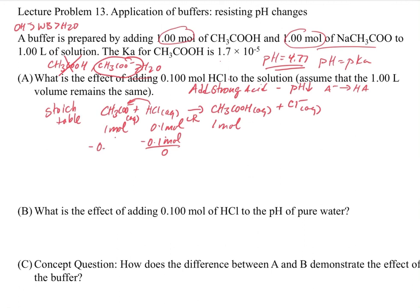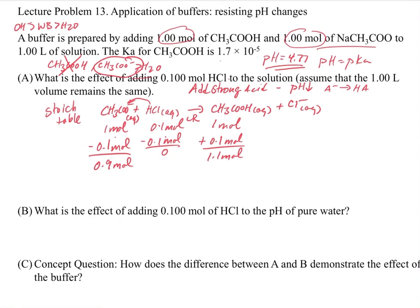The HCl converts 0.1 moles of acetate, leaving 0.9 moles of acetate, and adds 0.1 moles to the acetic acid side, giving 1.1 moles of acetic acid. So pH = pKa + log([A⁻]/[HA]) = 4.77 + log(0.9/1.1), which gives us pH = 4.68. We've confirmed the pH has gone down — adding this strong acid decreased the pH from 4.77 to 4.68, a relatively small change.